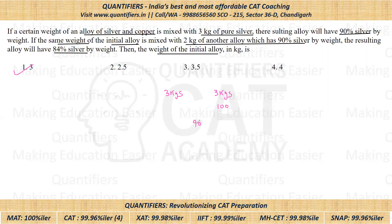So 90 will come in the center. Now we apply allegation. You can see that because we have taken same quantities, the ratio should be one is to one. The difference of 100 and 90 is 10. So this value should be 10 less than 90, which means this has to be 80. So our initial alloy is 80% silver.